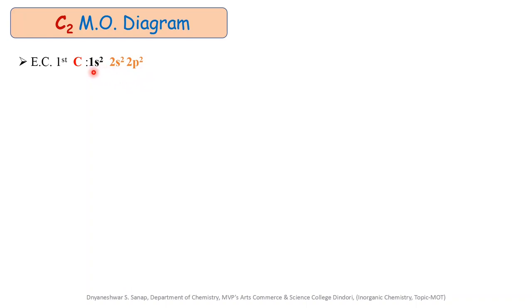There are two shells present in the carbon atom. The first shell is the K shell with the 1s orbital containing two electrons, and the second shell is the L shell containing 2s and 2p orbitals with four electrons. The 1s atomic orbital is the inner orbital and does not take part in bonding during the formation of the C2 molecule. Only the 2s and 2p orbitals participate during the formation of C2.